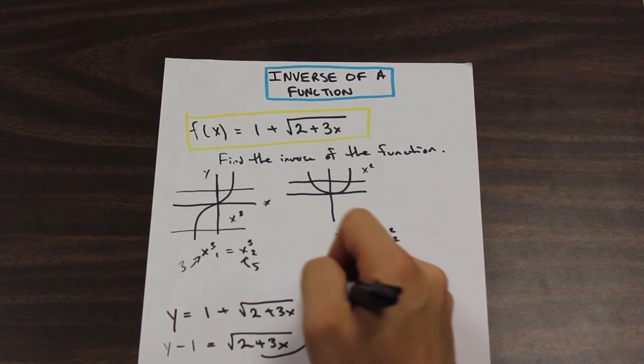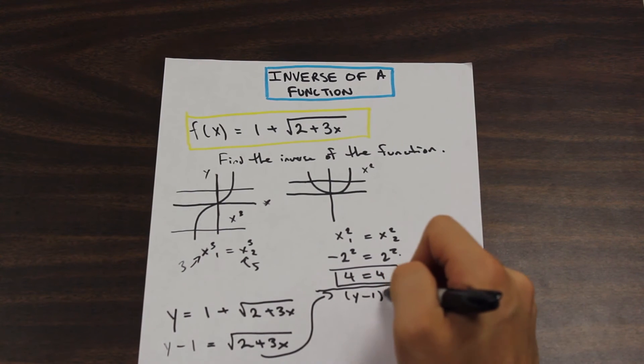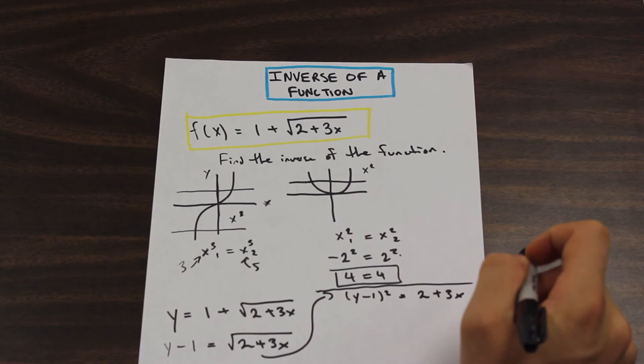So we have y minus 1 squared equals 2 plus 3x, all right?